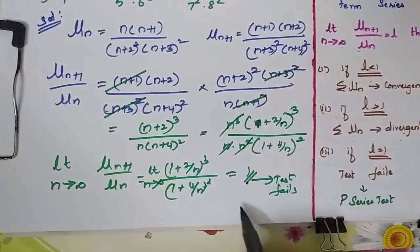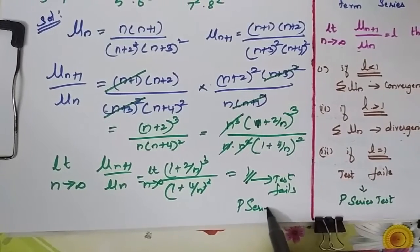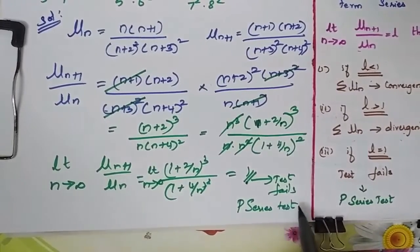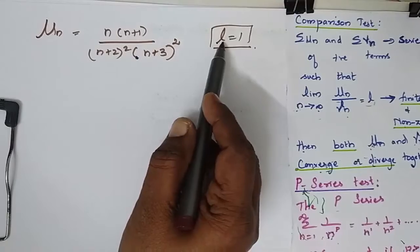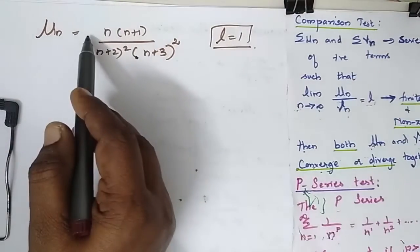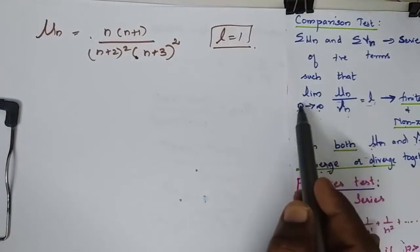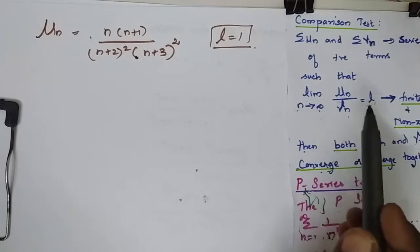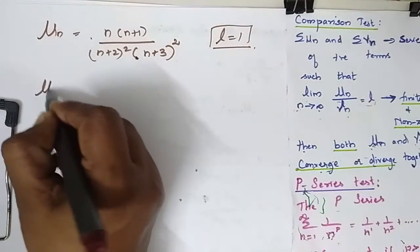Since L = 1, I go for the comparison test, where my u(n) is this. I have to find the limit as n tends to infinity of u(n) by v(n). So I have to simplify this u(n).